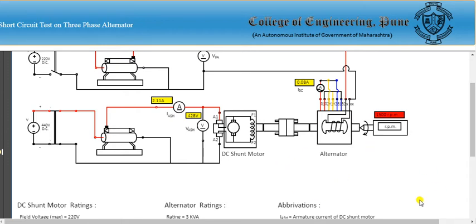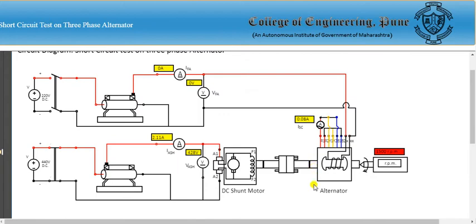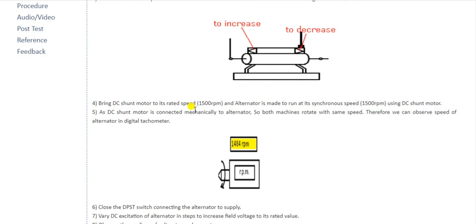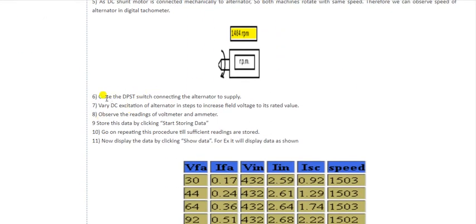The alternator is now running at the rated speed of 1500 rpm. The voltage across the DC motor is 428 V and the line current is 2.11 A. The alternator is now running at synchronous speed. Next, close the DPST switch connecting the alternator to the DC excitation supply.